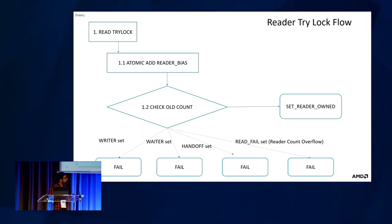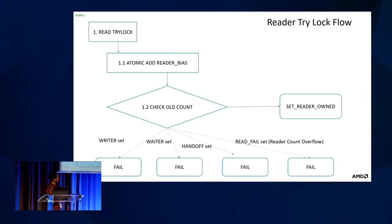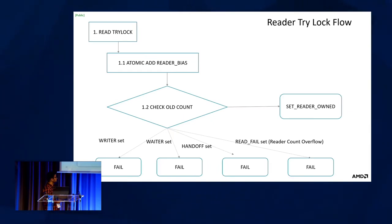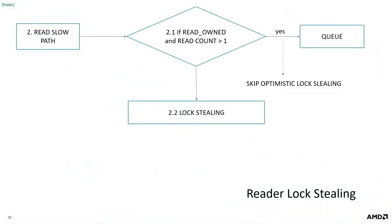In the try_lock flow, failure conditions are: if the writer bit is set (a writer thread registered before this reader), the try_lock fails; if the waiter bit is set (waiters are in the queue), it also fails; if the handoff bit is set (to prevent skipping waiters), it fails again; and if there is a read count overflow (unlikely), it also fails. Otherwise the try_lock succeeds and the read_owned bit is set.